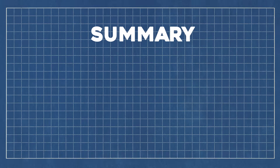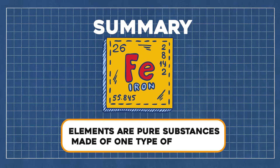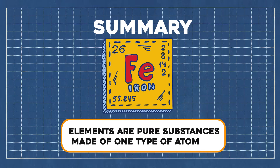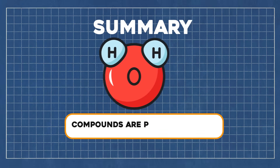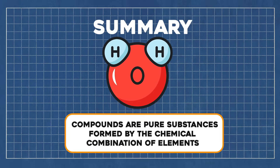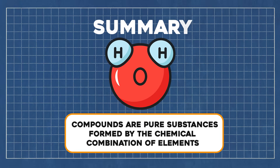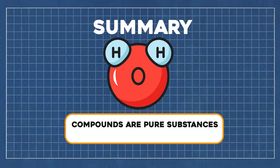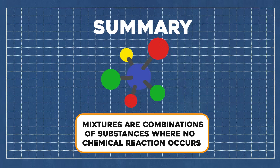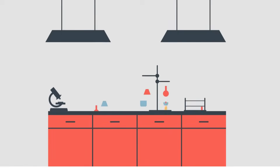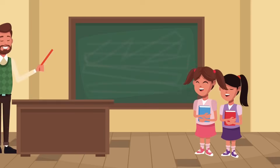Summary. To wrap it up: elements are pure substances made of one type of atom; compounds are pure substances formed by the chemical combination of elements; mixtures are combinations of substances where no chemical reaction occurs. Each of these plays a vital role in the world around us, from the air we breathe to the water we drink.